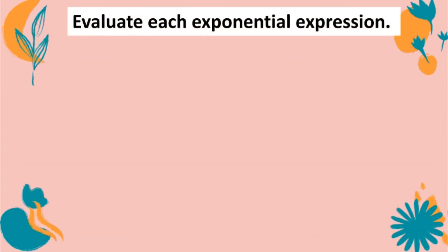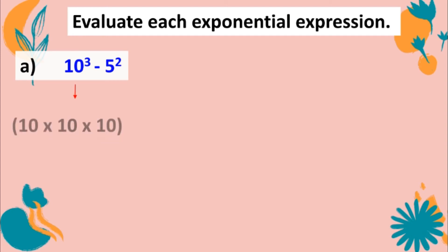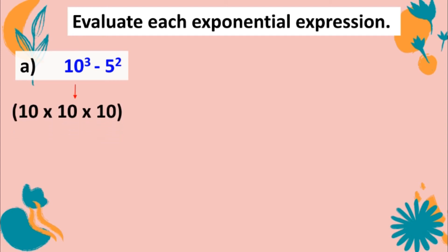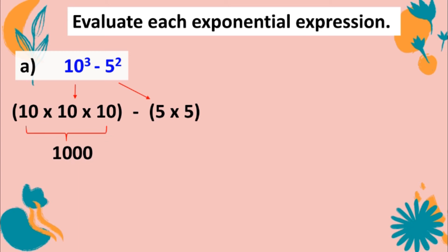Evaluate each exponential expression. Letter A: 10 cubed minus 5 squared. The expanded form of 10 cubed is 10×10×10, and 5 squared is 5×5. Simplifying: 10×10×10 equals 1,000, and 5×5 equals 25. So 1,000 minus 25 equals 975.